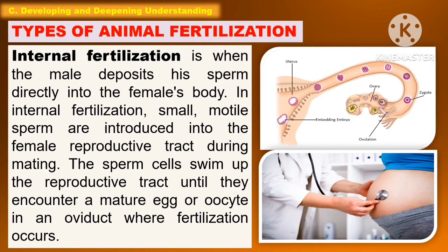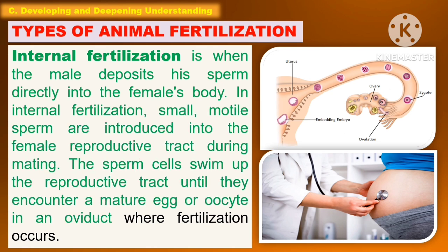On the other hand, internal fertilization is when the male deposits his sperm directly into the female's body. Small, motile sperm are introduced into the female reproductive tract during mating. The sperm cells swim up the reproductive tract until they encounter a mature egg or oocyte in the oviduct, where fertilization occurs.